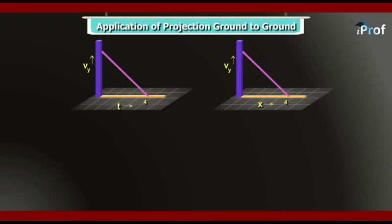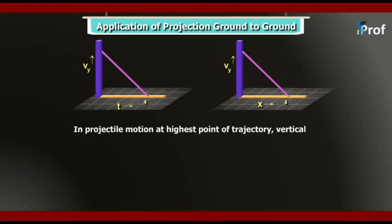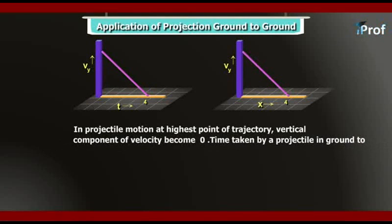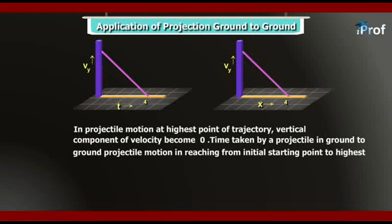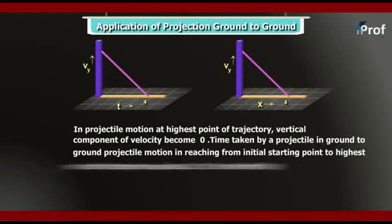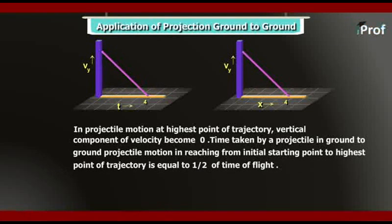In projectile motion, at the highest point of the trajectory the vertical component of velocity becomes 0. This is a very important concept — always remember it. The time taken by the projectile in ground-to-ground projectile motion to reach from the initial starting point to the highest point of the trajectory is equal to half of the time of flight.